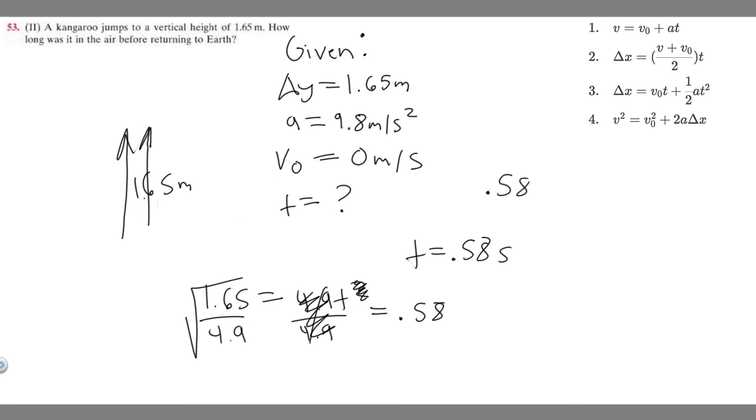If you go ahead and do that you should get it equals 1.16 and then this is going to be seconds. So 1.16 seconds, you can round however you want but this is going to be your answer. How long was it in the air before returning to earth? 1.16 seconds.